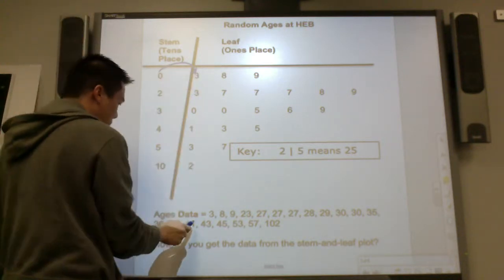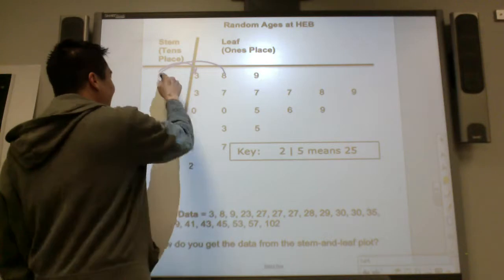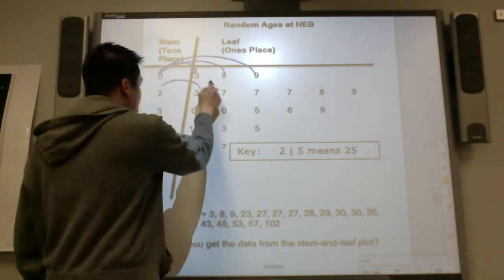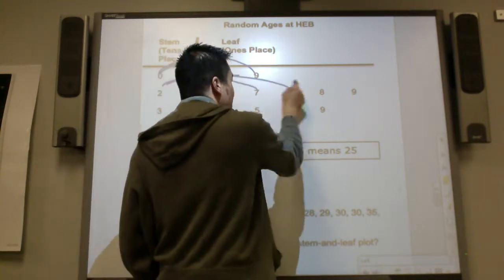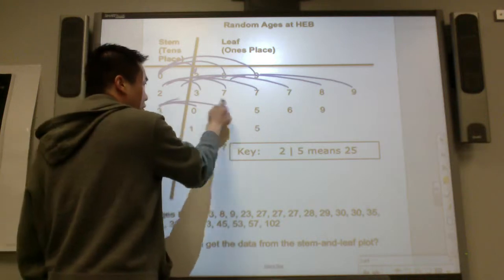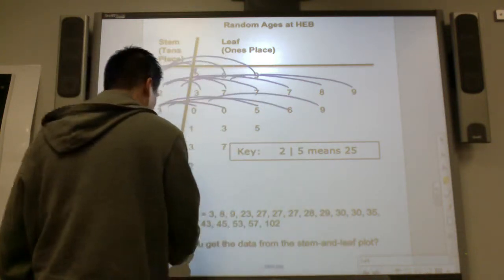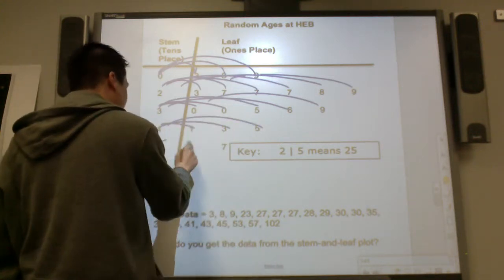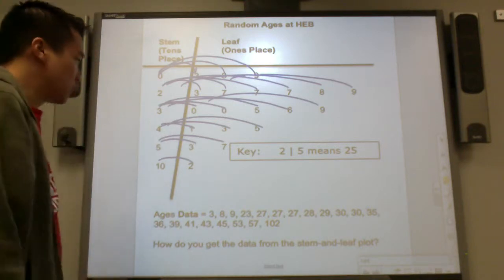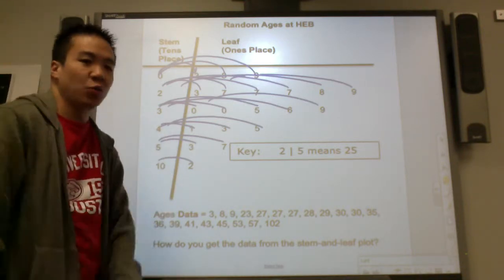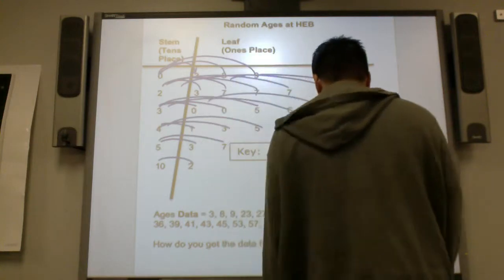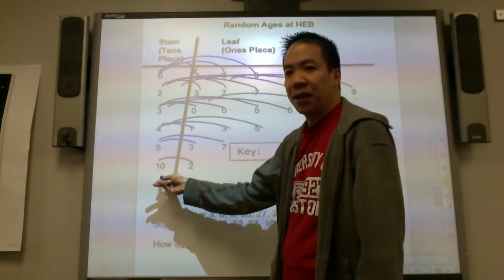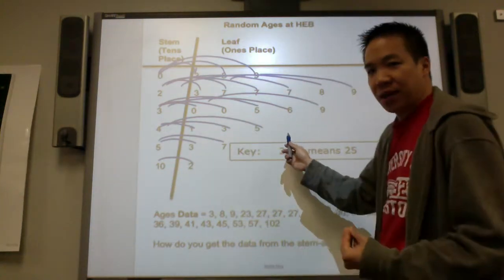Putting zero and three together makes three. Zero and eight makes eight. Zero and nine makes nine. Then twenty-three, two and seven makes twenty-seven, two and eight makes twenty-eight, two and nine makes twenty-nine. Then thirty, thirty, thirty-five, thirty-six, thirty-nine. In the forties: forty-one, forty-three, forty-five. In the fifties: fifty-three, fifty-seven. And one-oh-two: put the ten and two together, it makes one-oh-two. So you split the tens place from the ones place — or even the hundreds and tens separated from the ones place.